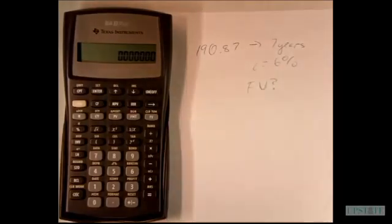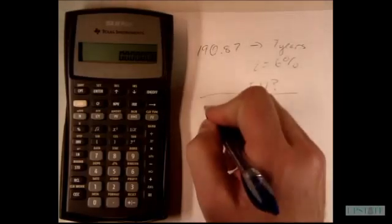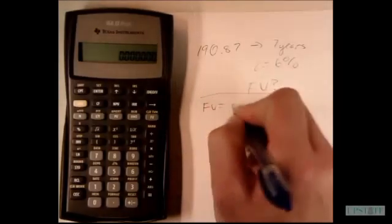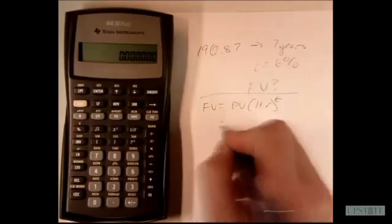We're putting it in an account and trying to figure out the future value. There are two ways to do this. One is using any basic calculator with the formula: future value equals present value multiplied by 1 plus r to the t, and we can just plug all this in.